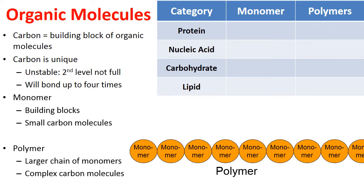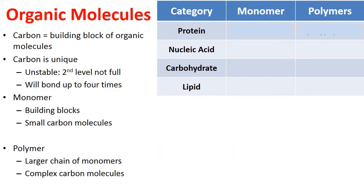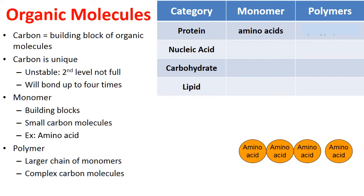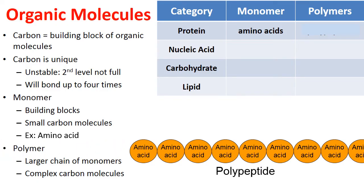Proteins are made from building blocks called amino acids. When a bunch of amino acids bond together, they form what's called a polypeptide — that's the polymer of a protein. The polypeptide will then twist and fold into a final protein. That is all discussed in my separate video specifically related to proteins.